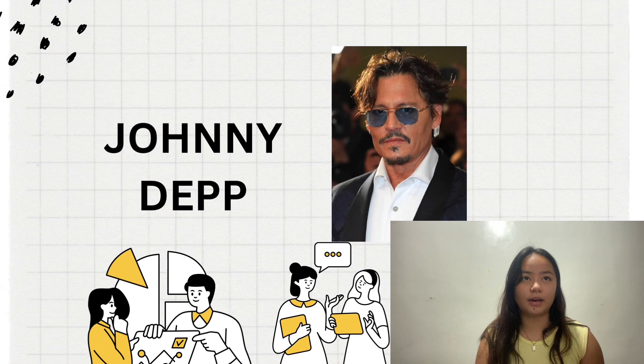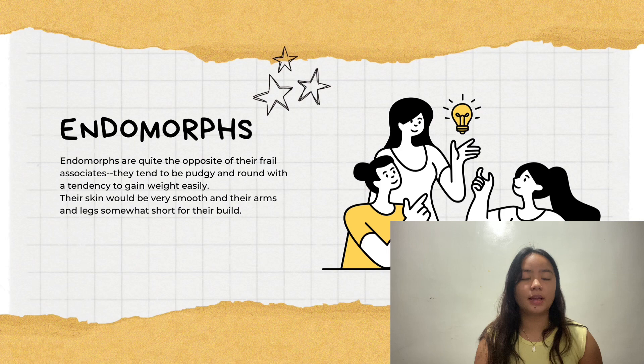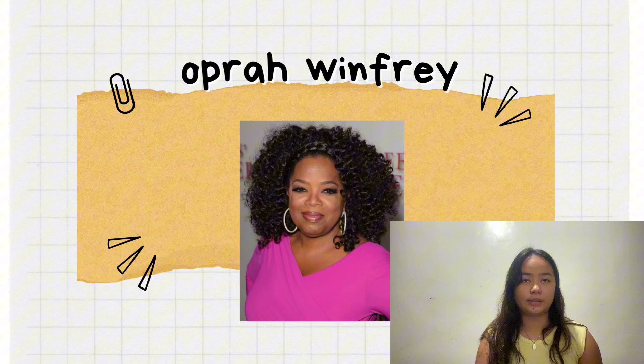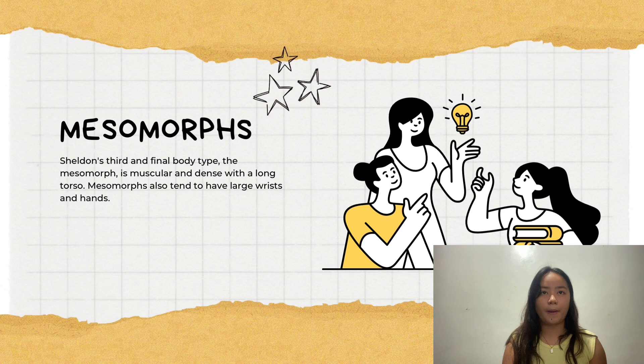Next is the endomorph. Endomorphs are quite the opposite of the frail ectomorphs. They tend to be pudgy and round, with a tendency to gain weight easily. Their skin would be very soft, and their arms and legs are somehow short for their build.